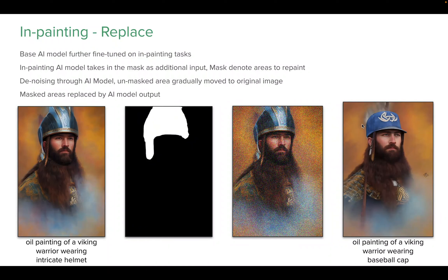We have already seen image-to-image — how we add noise to an image and then denoise it through stable diffusion to get a variant of an image. Depending on the image strength, we either get a completely different image or one that closely resembles the input. But sometimes we don't want to change the whole image, only a section of it.